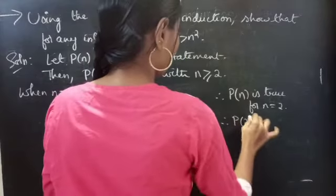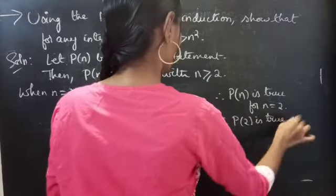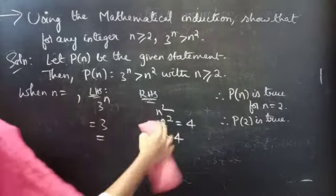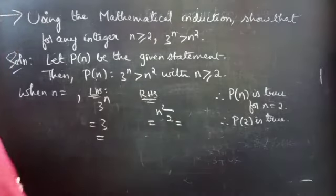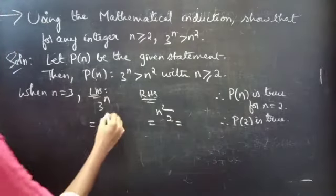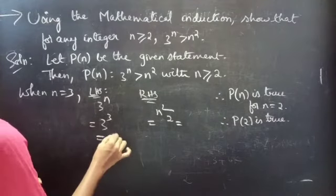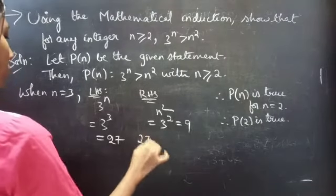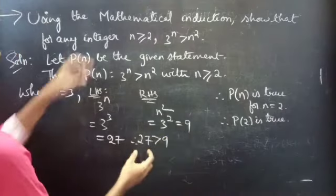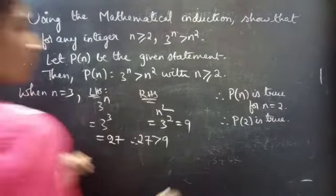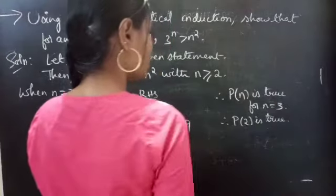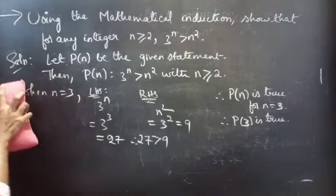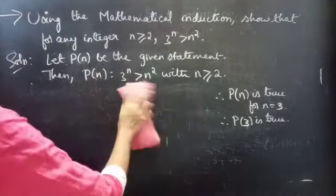Therefore P(2) is true. Likewise, we can check for n = 3. When n = 3, 3³ = 3 × 3 × 3 = 27, and 3² = 9. Therefore 27 is greater than 9, so LHS is greater than RHS. Therefore P(3) is true. You can also check for n = 4, 5, 6 and so on for any integer greater than or equal to 2.